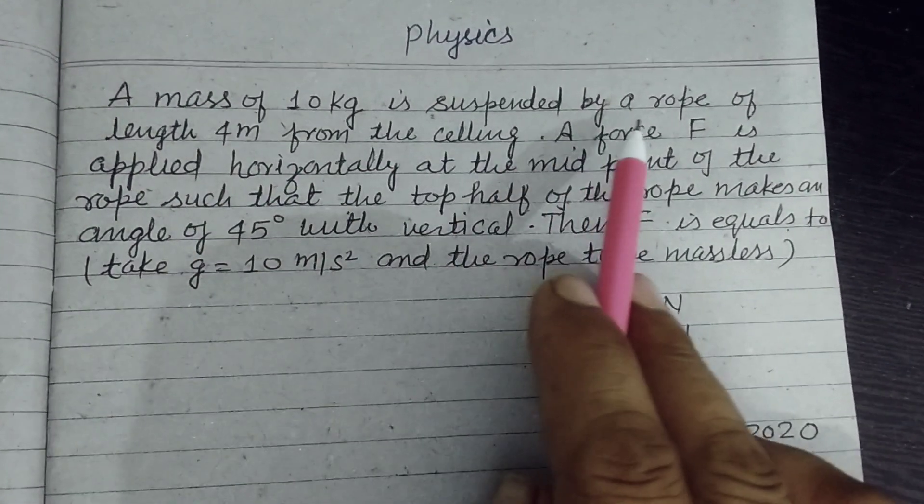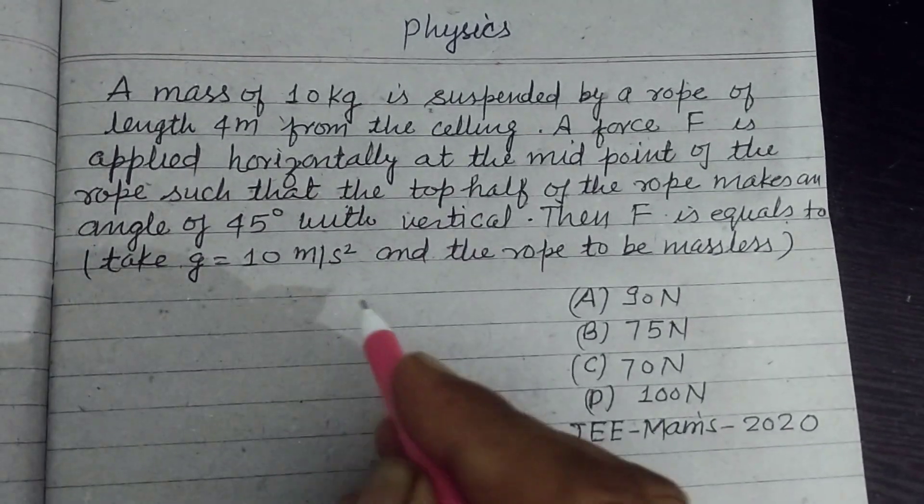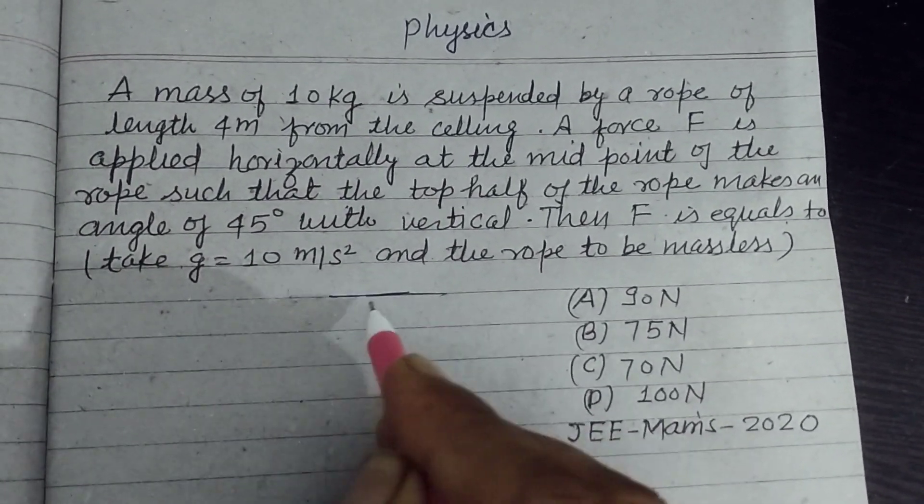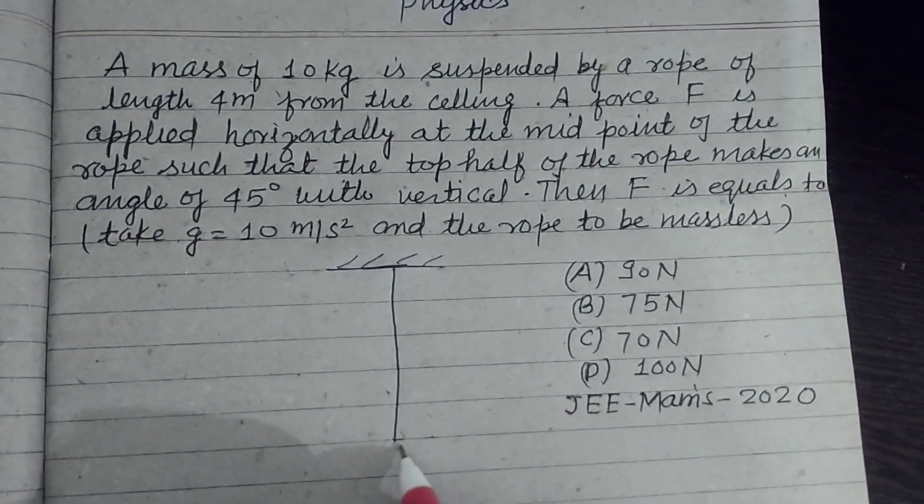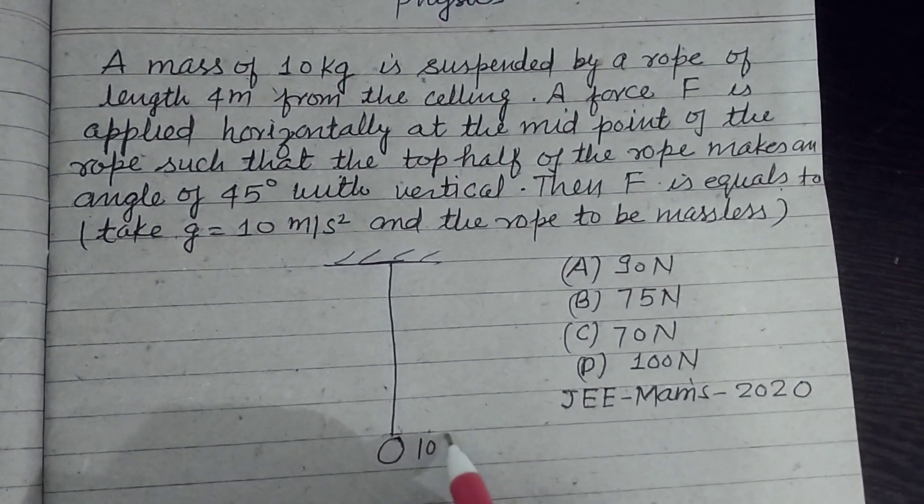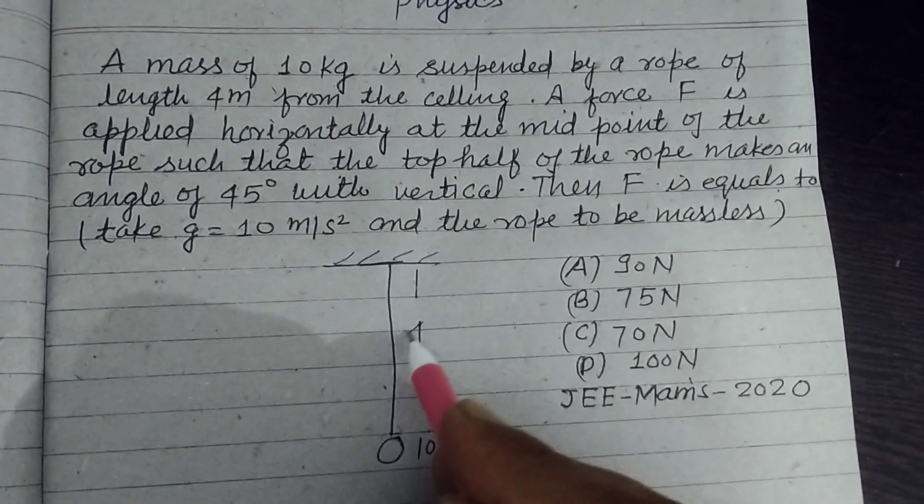A mass of 10 kg is suspended by a rope of length 4 meters from the ceiling. So here is the ceiling and a mass of 10 kg is suspended from this rope of length 4 meters.